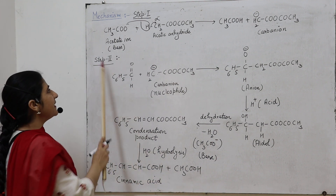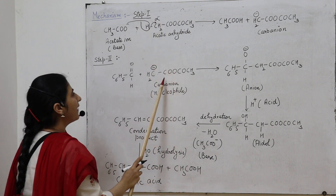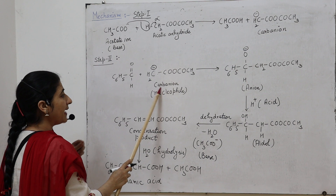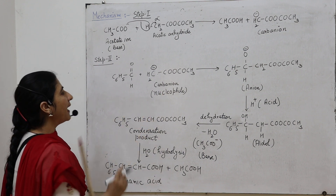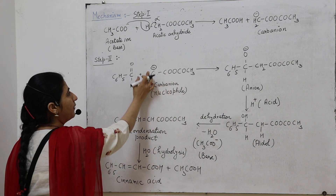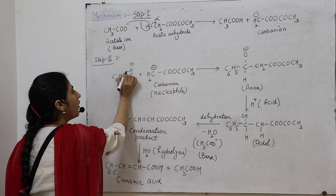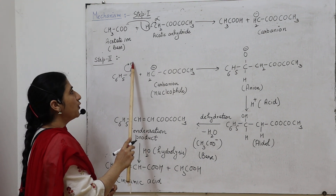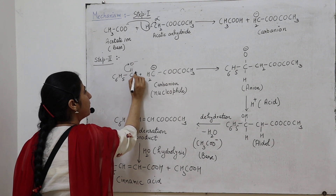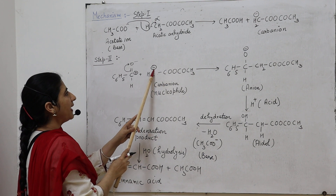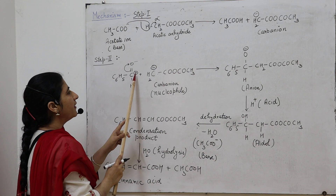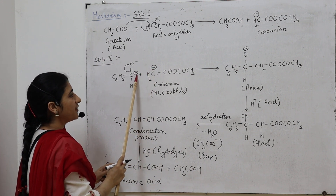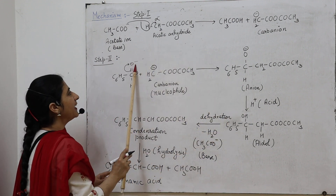This is the first step. In the second step, the carbanion produced in the first step reacts with the aldehyde molecule — benzaldehyde. The carbanion acts as a nucleophile, with the tendency to combine with electron-deficient sites. As the carbanion approaches the aldehyde, the pi electrons migrate toward the oxygen, since oxygen is more electronegative and withdraws electrons toward itself. As a result, oxygen acquires a negative charge and carbon acquires a positive charge.